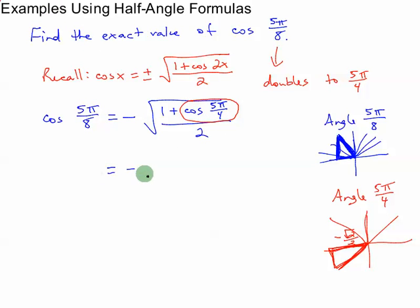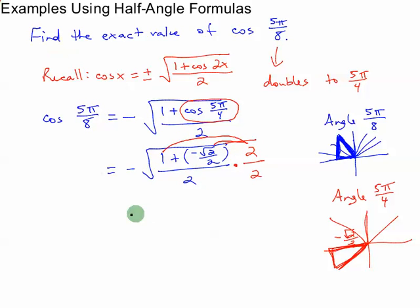So I have the negative square root of 1 plus negative square root of 2 over 2. Notice there's no cosine anymore, all over 2. Now I just have to simplify this. So I'll come underneath the square root. I'll extend my square root. I'll multiply the top of this fraction by 2 and the bottom of this fraction by 2. On top, the 2 is going to distribute over this plus.